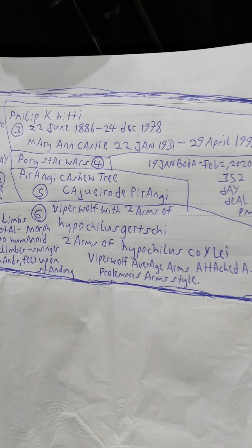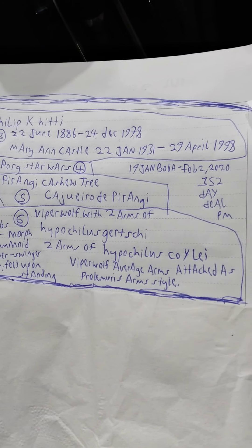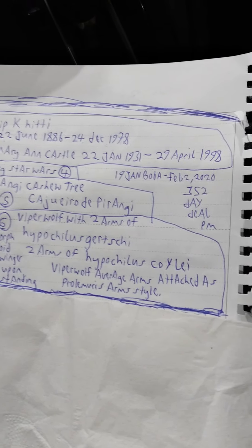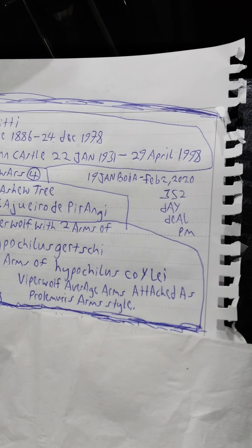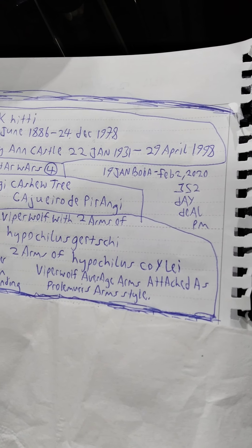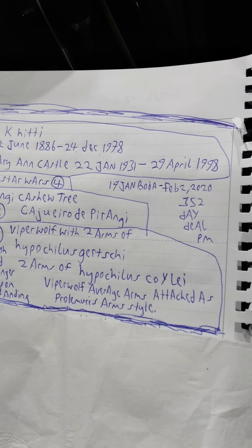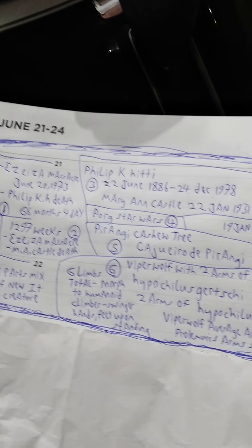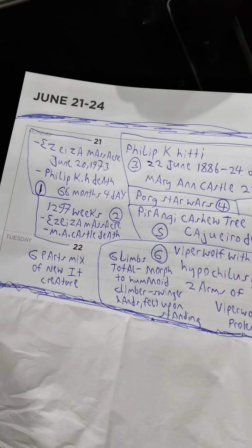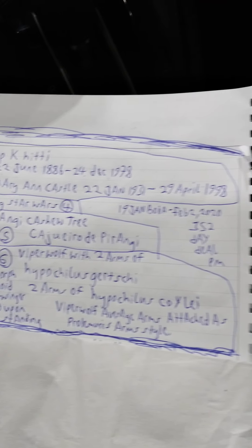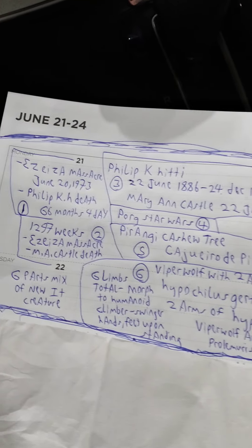So pretty cool type of variant of Viper Wolf. This is 19 January Boba, 2021, 352 days deal PM. So just keeping track of it, no rush or anything. It's all okay. But this is an unit creature.